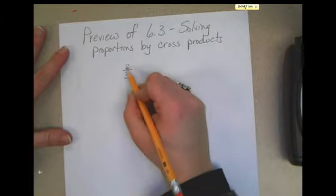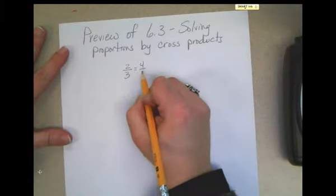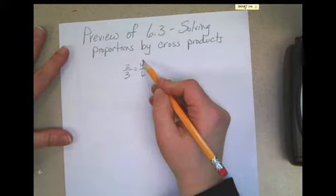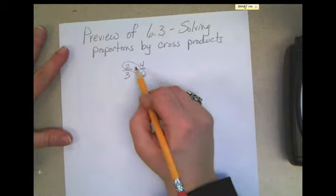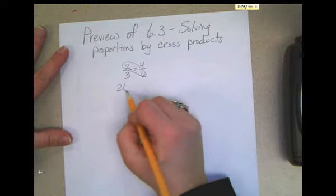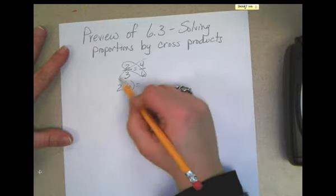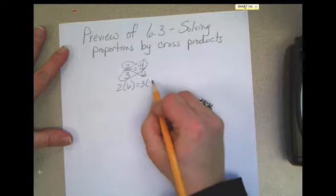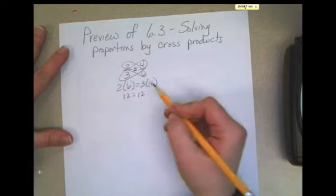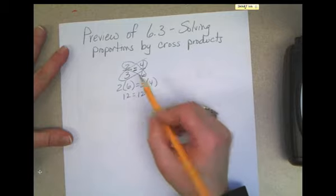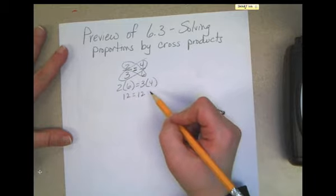We all know that 2 to 3 is equal to 4 to 6, mostly because usually if we have 4 to 6, we would reduce it to 2 to 3. But notice that when you have a proportion that's equal, 2 times 6 is equal to 3 times 4. If these two proportions are equal, that is always true. The cross products are also equal.